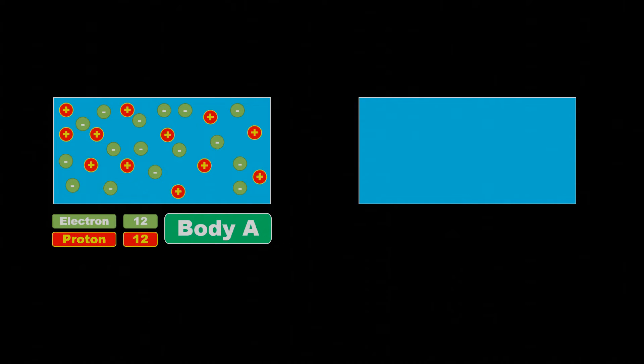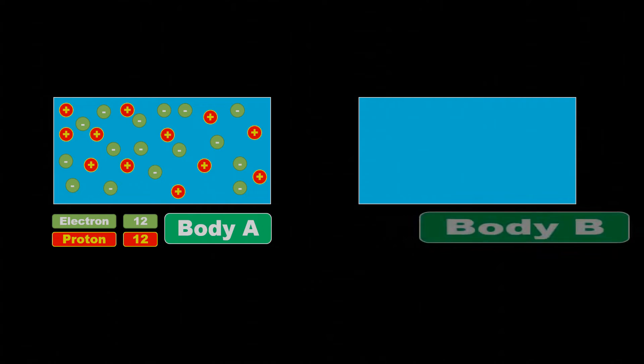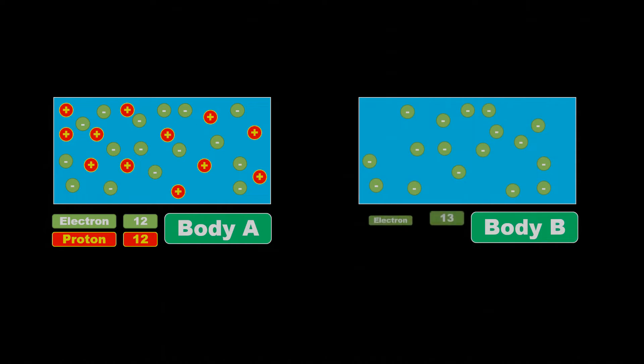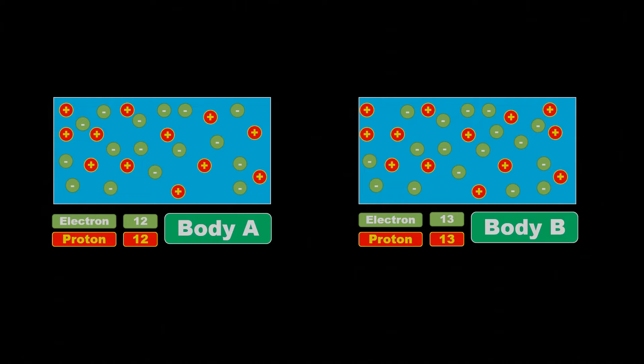Let's try to understand it in simple terms. Consider we have two bodies. The first body has 12 electrons and 12 protons in its atoms, while the second body has 13 electrons and 13 protons, and both bodies are electrically neutral.